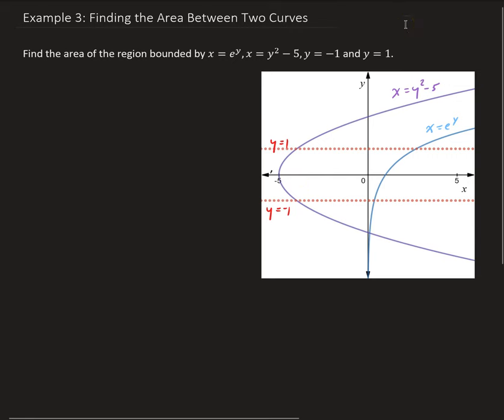So to do this, we have that the area is equal to... Since these functions are in terms of y, we can approach this using a horizontal representative piece. So I'm just going to go ahead and draw in that piece here. So this will be dy, so that means our integral must be in terms of y.